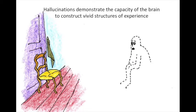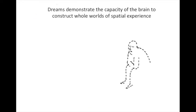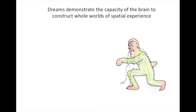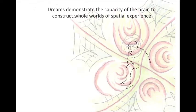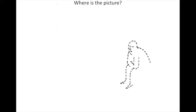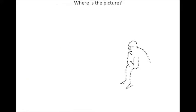Hallucinations demonstrate the capacity of the brain to construct vivid structures of experience. Dreams demonstrate the capacity of the brain to construct whole worlds of spatial experience. So all this raises the question: where is the picture of our experience that we see when we open our eyes? We see it to be outside of ourselves, out in the world directly, and yet the fact that it disappears when you close your eyes suggests that it is causally downstream of the closing of your eyelids.